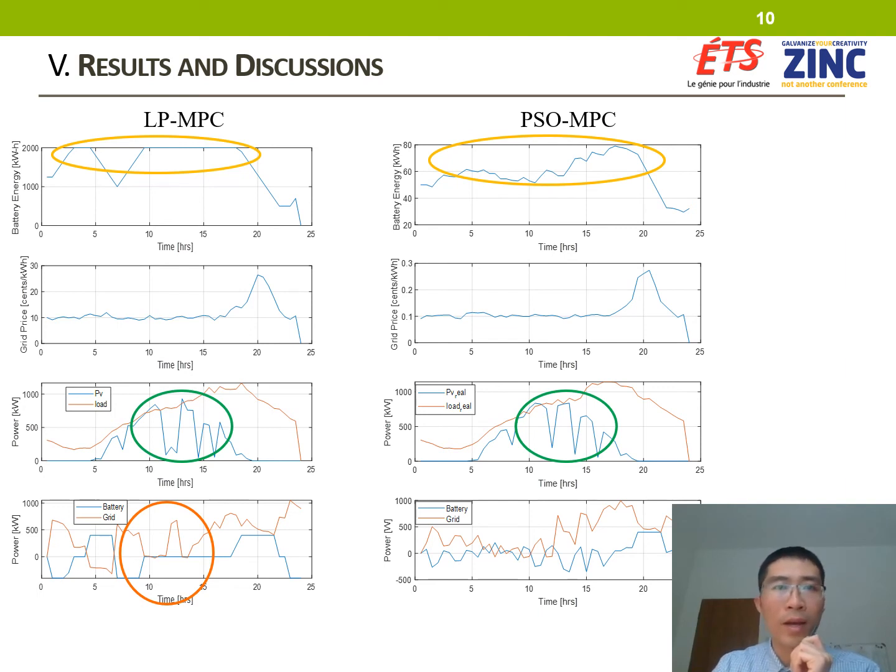Besides, in the LP-MPC results, we can see that the battery receives from the grid when the price is low, then discharges afterwards even at low load demand and price. But in the PSO-MPC, only a small amount of energy is taken from the grid to charge up the battery, and the battery supports the grid better over the fluctuation of solar irradiance. It can be considered that the PSO-MPC achieves a better operation scheme for the energy storage system.